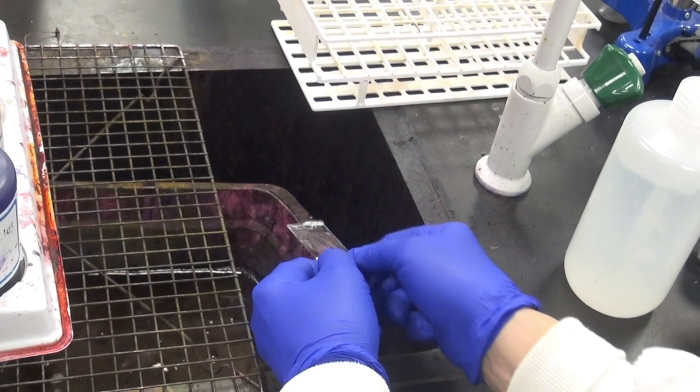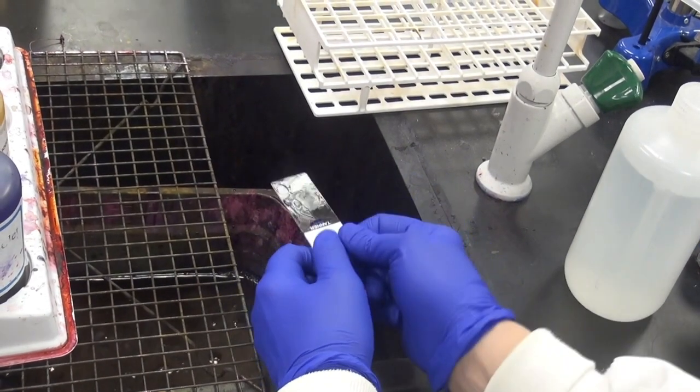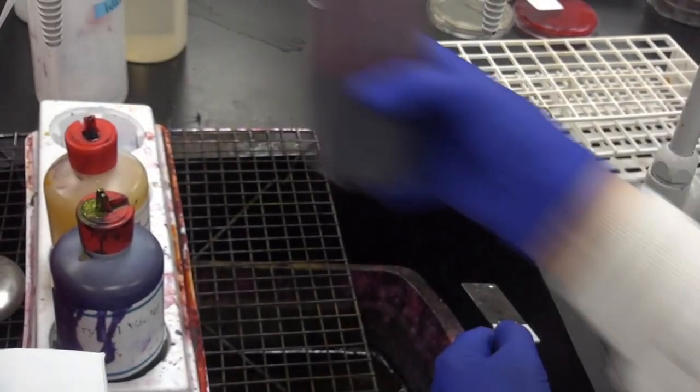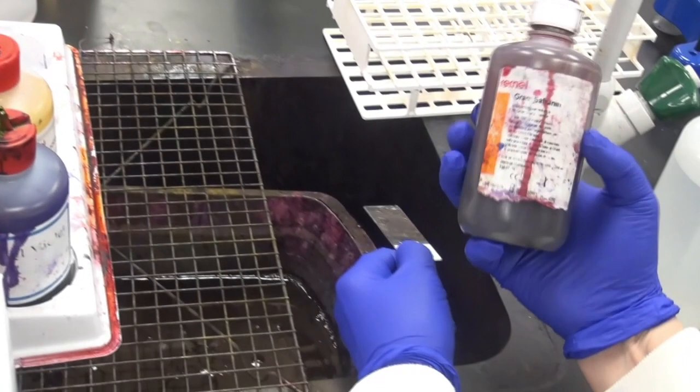So-called Gram-positive bacteria will hold onto the primary stain during this step and retain their purple color. Gram-negative organisms will lose their stain and become decolorized.